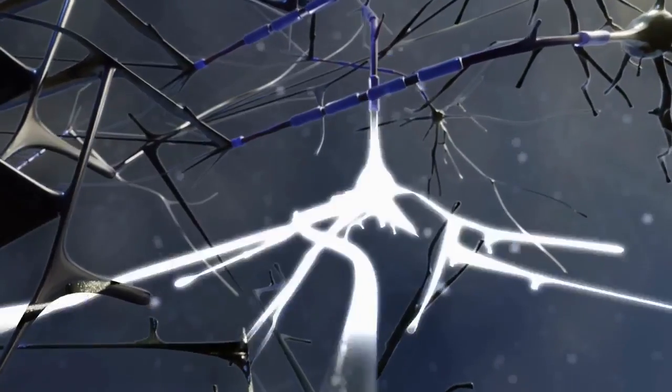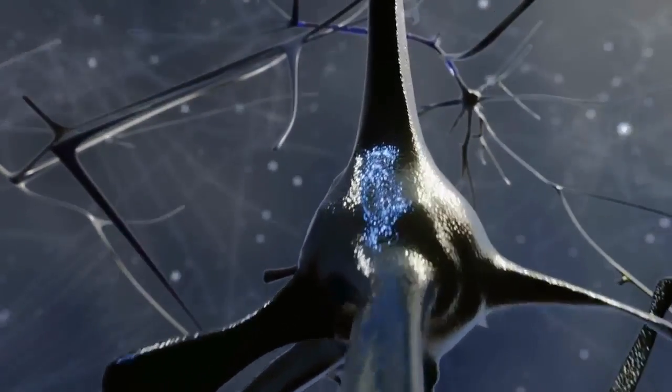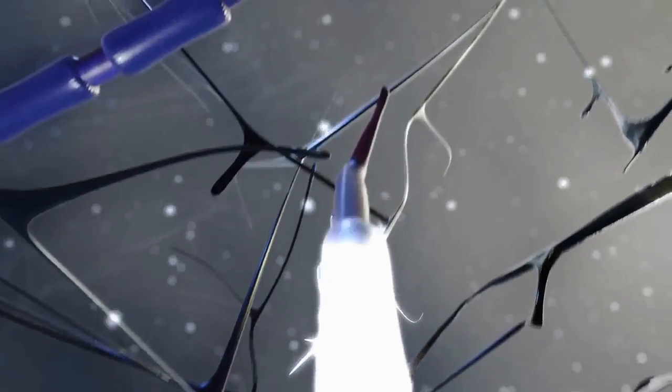Gray matter. Your brain contains about 100 billion nerve cells called neurons. They make up your brain's gray matter.